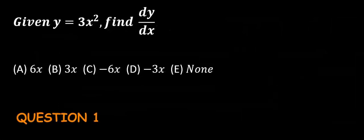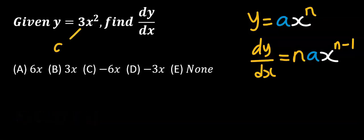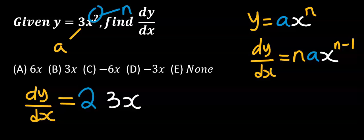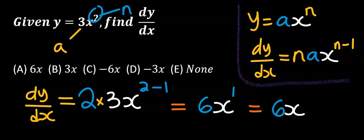Now let's consider the first question. Considering the general formula, 3 is our a and 2 is the n. Hence the 2 will come down, the 3 and x will not move, and the 2 will minus 1 at the power. It must always be minus 1 according to the general rule, and the answer is 6x to the power of 1, which is 6x — that is option A.